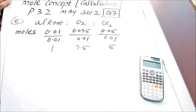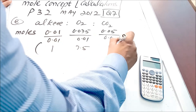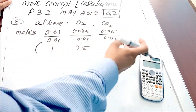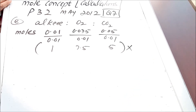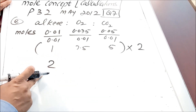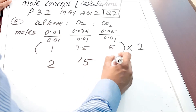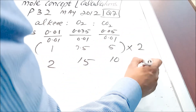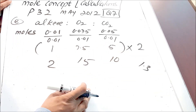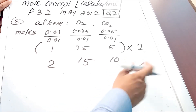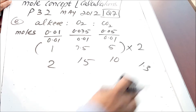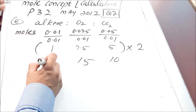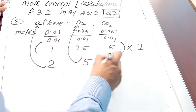But it's not truly simple yet — 7.5 is a decimal. I cannot round it to 8 or down to 7. So I need to find the smallest multiplier that gives whole numbers for all three. If I multiply all by 2: 1 becomes 2, 7.5 becomes 15, and 5 becomes 10. So the whole-number mole ratio is alkene : oxygen : CO₂ = 2 : 15 : 10.